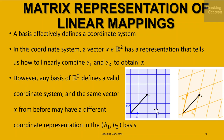A basis effectively defines a coordinate system. In this coordinate system, a vector x belonging to R^n has a representation telling us how to linearly combine e1 and e2 to obtain x. However, any basis of R² defines a valid coordinate system and the same vector x may have a different coordinate representation in the b1, b2 basis.